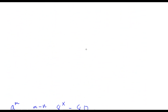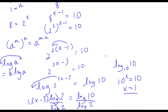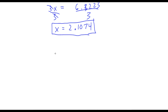So x is equal to 2.1074. Remember, our original equation was 8 to the power of x is equal to 80. So if I plug in 2.104 into my calculator — 8 to the power of 2.104 — it is indeed approximately equal to 80. It's not the exact value of 80, but it is approximately equal to 80.